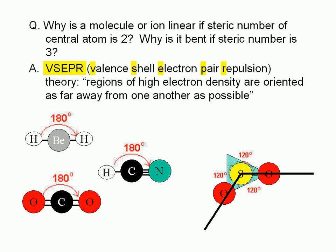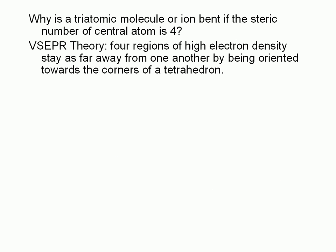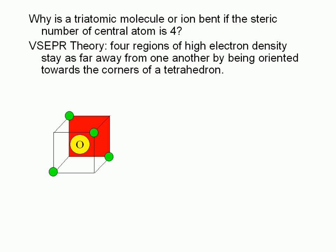Why is a triatomic molecule or ion bent when the steric number of the central atom is 4? According to VSEPR theory, four regions of high electron density would need to be oriented towards the corners of a tetrahedron in order for them to be as far away from each other as possible. Imagine a cube with the central atom in the middle — the four corners of the tetrahedron are indicated by the green circles. Since we're dealing with a triatomic molecule, only two of these corners would have an atom. For a perfect tetrahedron, the angle traced is very close to 109.5 degrees.